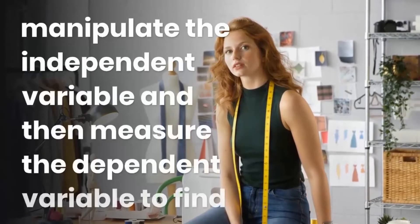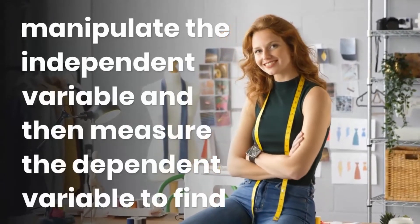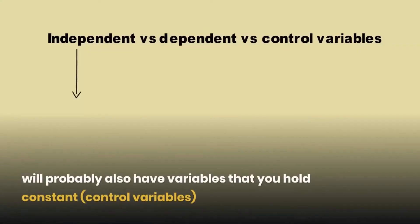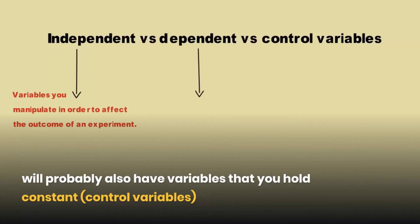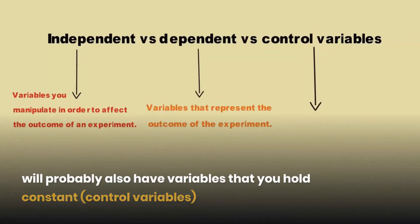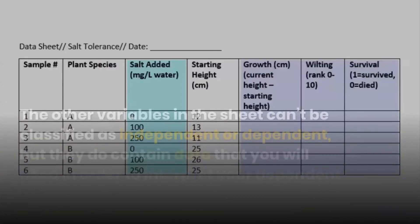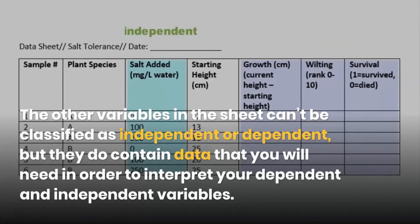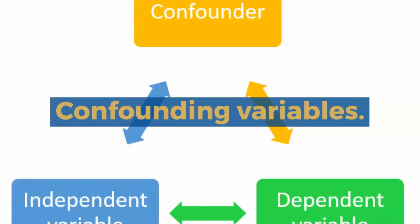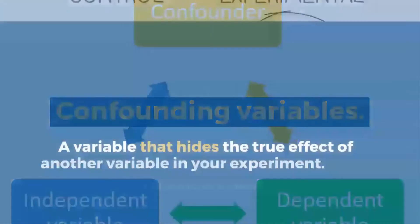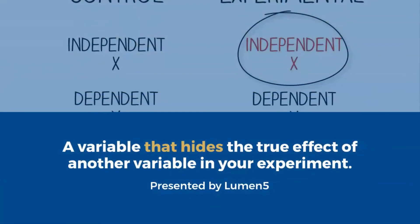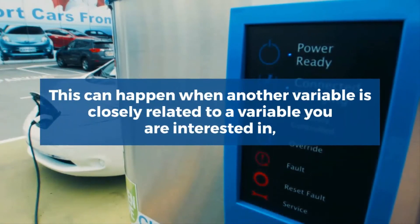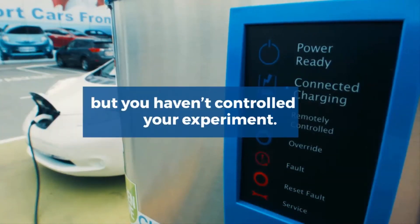You manipulate the independent variable — the one you think might be the cause — and then measure the dependent variable — the one you think might be the effect — to find out what this effect might be. You will probably also have variables that you hold constant, called control variables, in order to focus on your experimental treatment. The other variables in the sheet can't be classified as independent or dependent, but they do contain data that you will need in order to interpret your dependent and independent variables. Other common types of variables include confounding variables — a variable that hides the true effect of another variable in your experiment. This can happen when another variable is closely related to a variable you are interested in, but you haven't controlled it in your experiment.